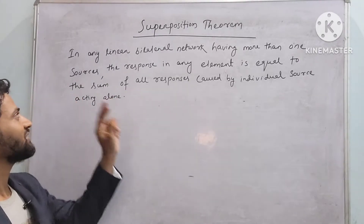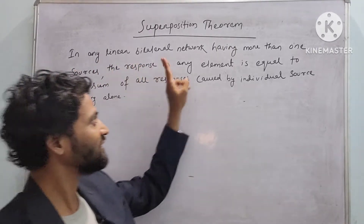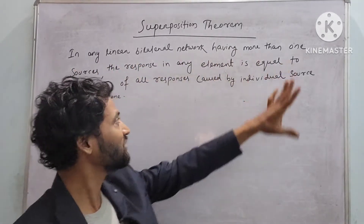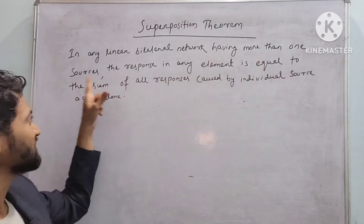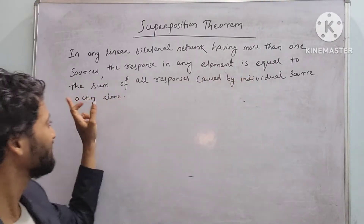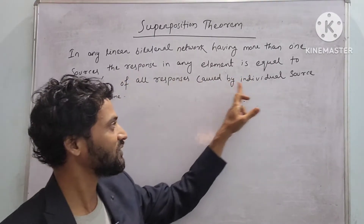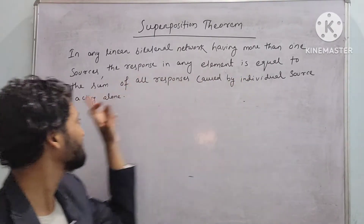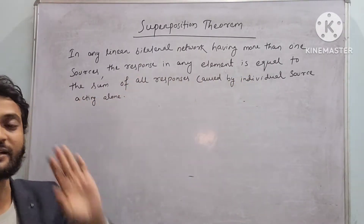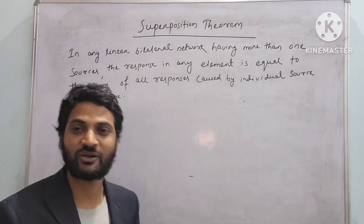Starting with the definition: in any linear bilateral network having more than one source, the response in any element is equal to the sum of all responses caused by individual sources acting alone. This is the definition.